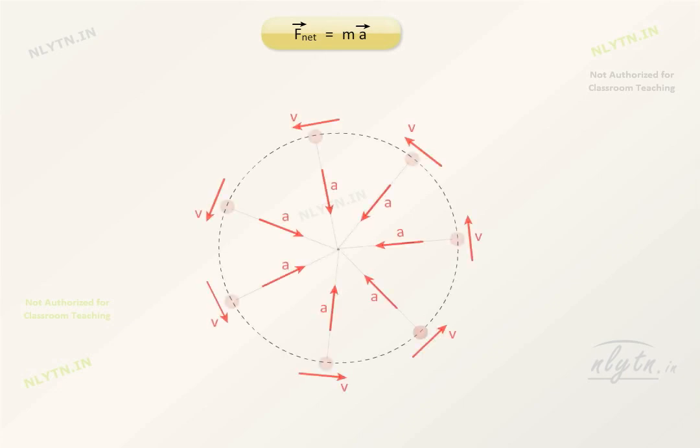As we know, Newton's laws state that if a particle has an acceleration, there must be a force responsible for it. For the case of uniform circular motion, when the particle has centripetal acceleration, there must be a force causing this acceleration.